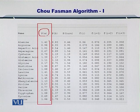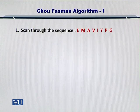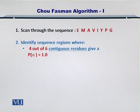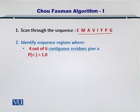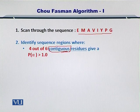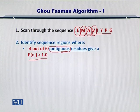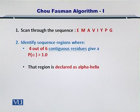I'll talk about the propensity for formation of an alpha helix in the next slide. First, you take the amino acid sequence for which the structure is unknown and you want to predict its structure. Next, you identify the amino acid regions within this sequence for which 4 out of 6 contiguous neighboring residues give you a propensity for formation of an alpha helix greater than 1.0. You compute the propensity for each amino acid, multiply them together, and if the value is greater than 1, that region is declared as an alpha helix.